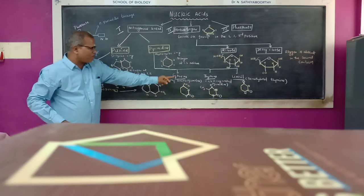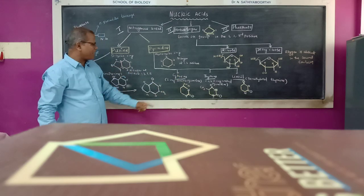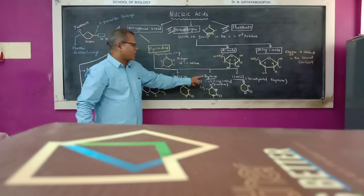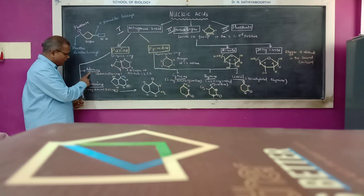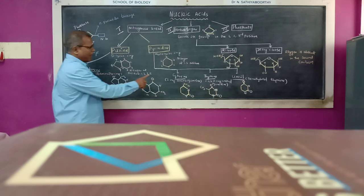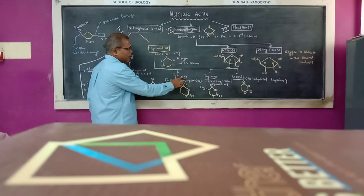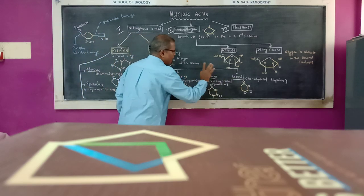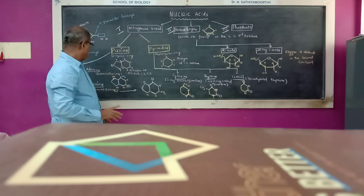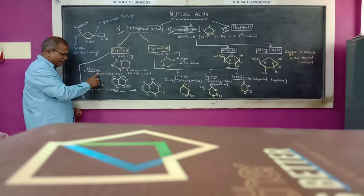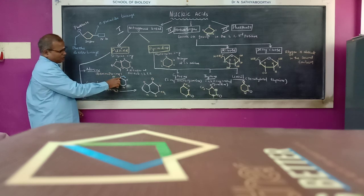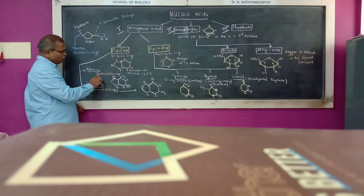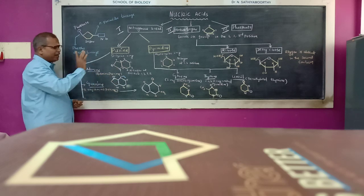Three types of pyrimidine bases are reported: cytosine, thymine, and uracil. Adenine is also known as 6-aminopurine, because an amino group is present at the 6th position.